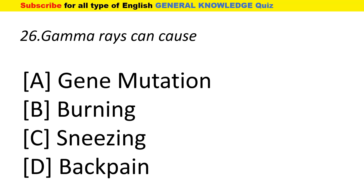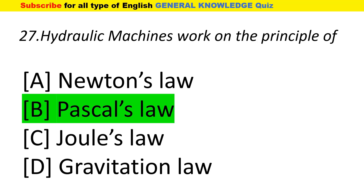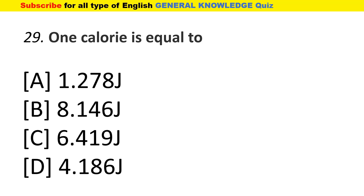Gamma rays can cause gene mutation. Hydraulic machines work on the principle of Pascal's law. The commercial unit of electric energy is kilowatt-hour. One calorie is equal to 4.186 joules.